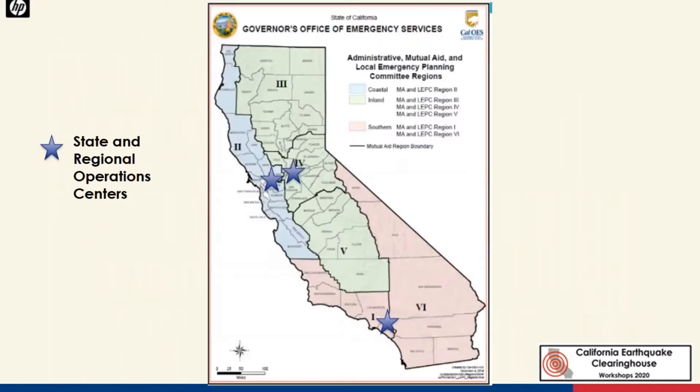This graphic helps visualize the mutual aid regions and the Cal OES Regional Operation Centers: the Inland Region Operation Center in Sacramento, the Coastal Operation Center in Fairfield, and the Southern Operation Center in Los Alamitos. This structure is important for funneling resource needs and requests up to the state level.